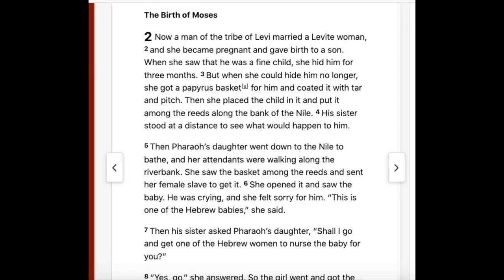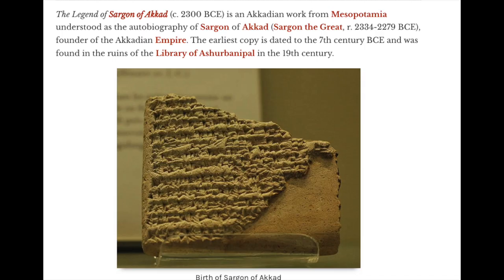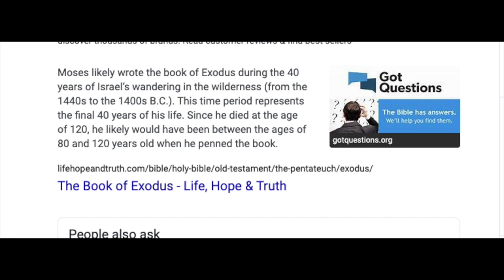Speaking about Moses, it seems as though there's a direct correlation between his story and Sargon of Akkad. In Exodus chapter 2 it says: 'Now a man of the tribe of Levi married a Levite woman, and she became pregnant and gave birth to a son. When she saw that he was a fine child, she hid him for three months. But when she could hide him no longer, she got a papyrus basket for him and coated it with tar and pitch. Then she placed the child in it and put it among the reeds along the bank of the Nile. His sister stood at a distance to see what would happen to him. Then Pharaoh's daughter went down to the Nile to bathe and sent her female slaves to get it.' The legend of Sargon of Akkad can be dated back to around 2300 BCE, and the book of Exodus came out roughly around 1440 BCE.